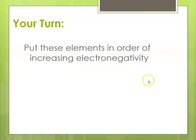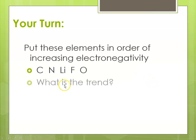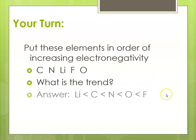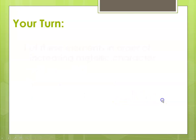How about electronegativity? Same elements. The trend is that it increases from left to right across a period, and we know that the most electronegative element on the periodic table is fluorine. So fluorine will have the largest electronegativity. In order: lithium would be less than carbon, which would be less than nitrogen, then oxygen, and then fluorine.